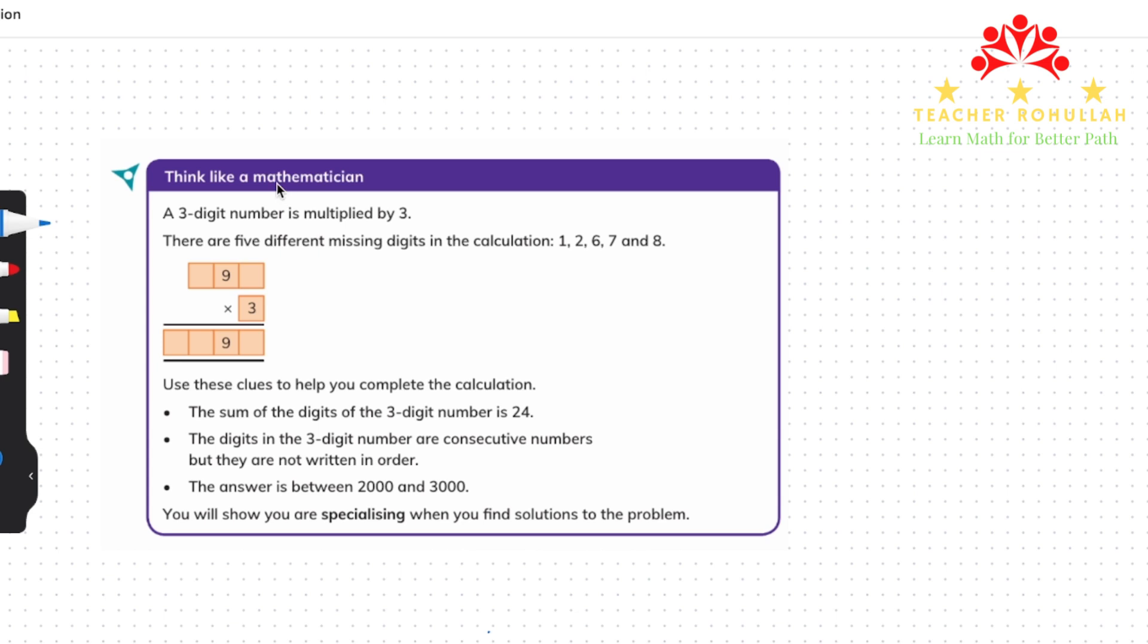And this question is on page 71 of Cambridge Primary Mathematics Learner's Book 4. And here we are going to find a problem that requires critical thinking.